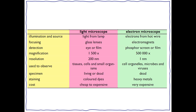Comparing light microscopes and electron microscopes: in a light microscope, the illumination source is light from a lamp, focusing is done by a glass lens, and detection is by the eye. Magnification is times 1,500 and resolution is about 200 nanometres. It is used to observe tissues, cells and small organisms. The specimen can be living or dead, staining involves coloured dyes, and the cost is fairly cheap in comparison to an electron microscope.